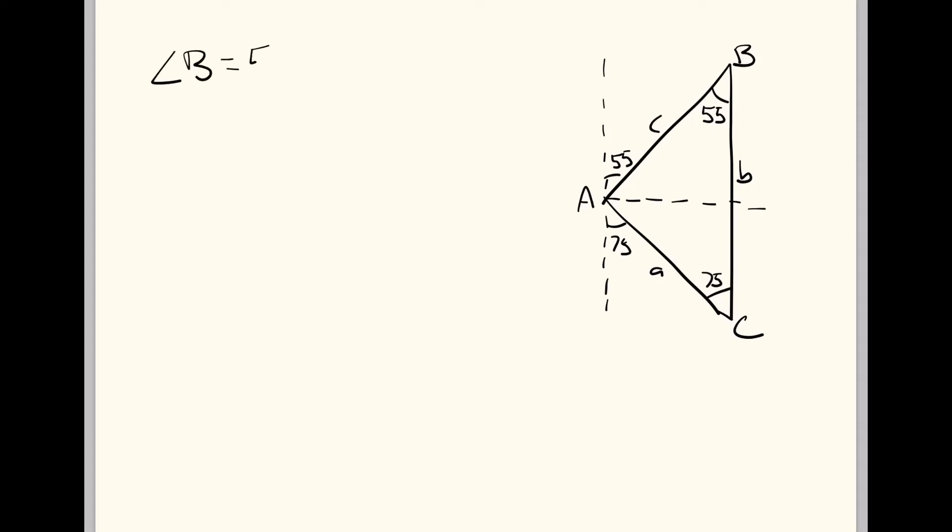Angle B equals 55 from opposite interior angles. And we know that angle A equals 180, which is the full angle of a triangle, minus 55, minus 75. That comes out to 50 degrees. So now we have angle A.